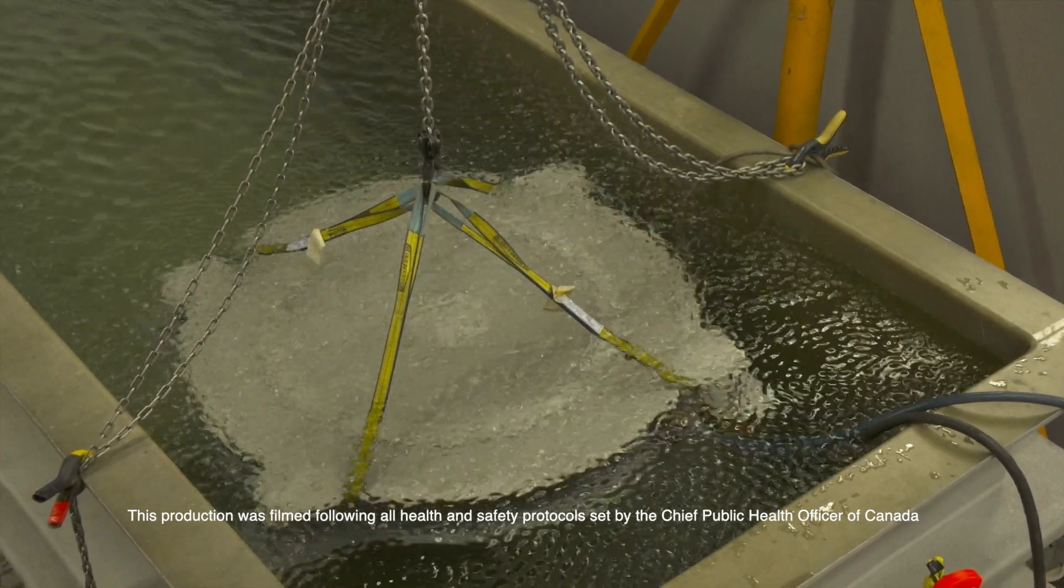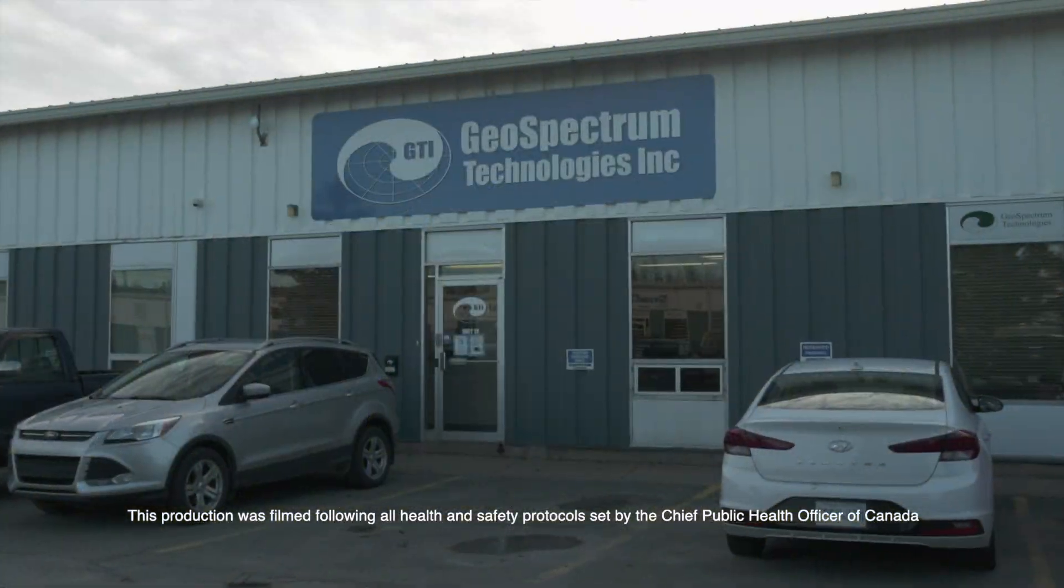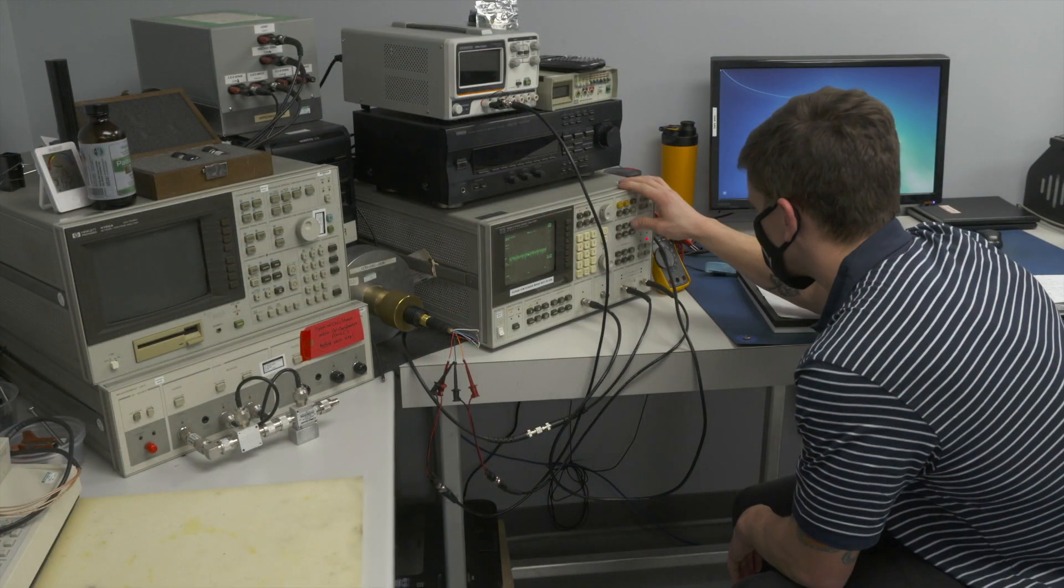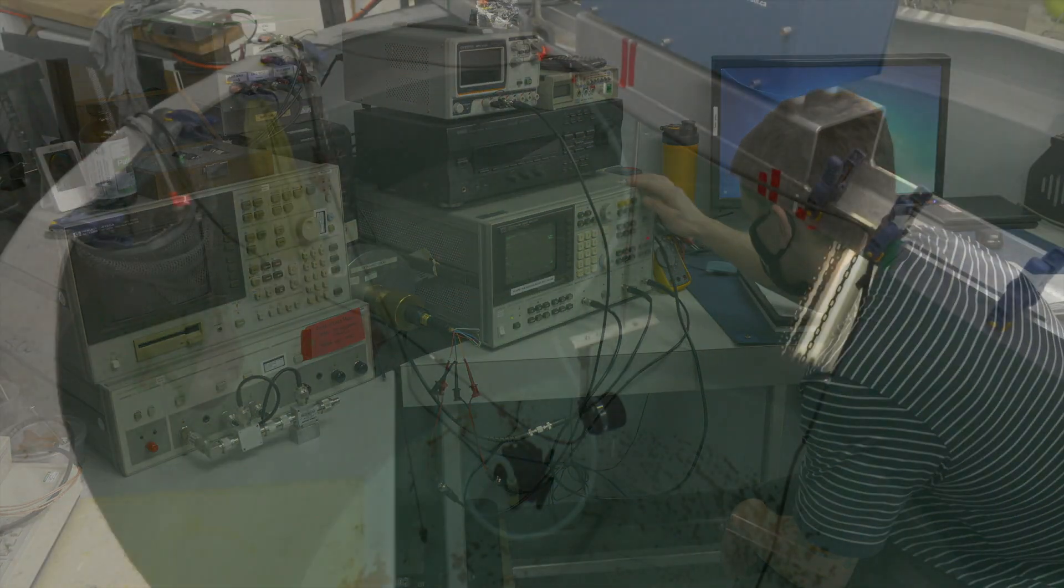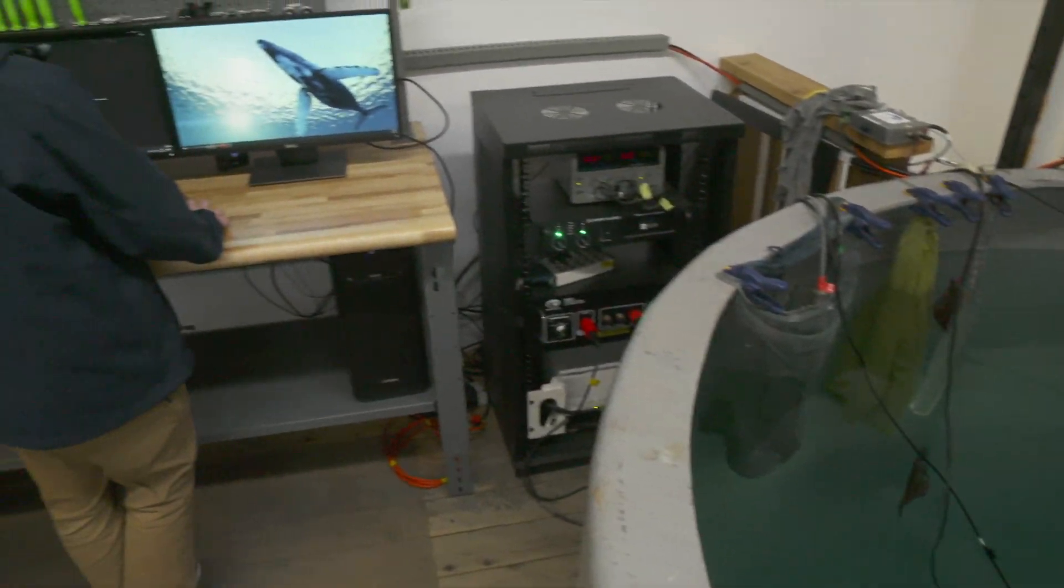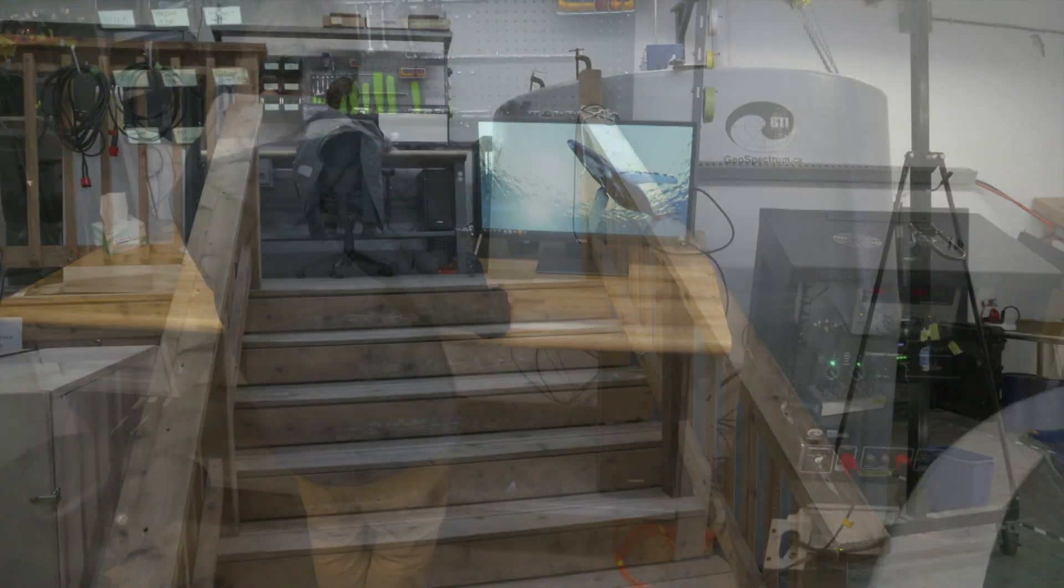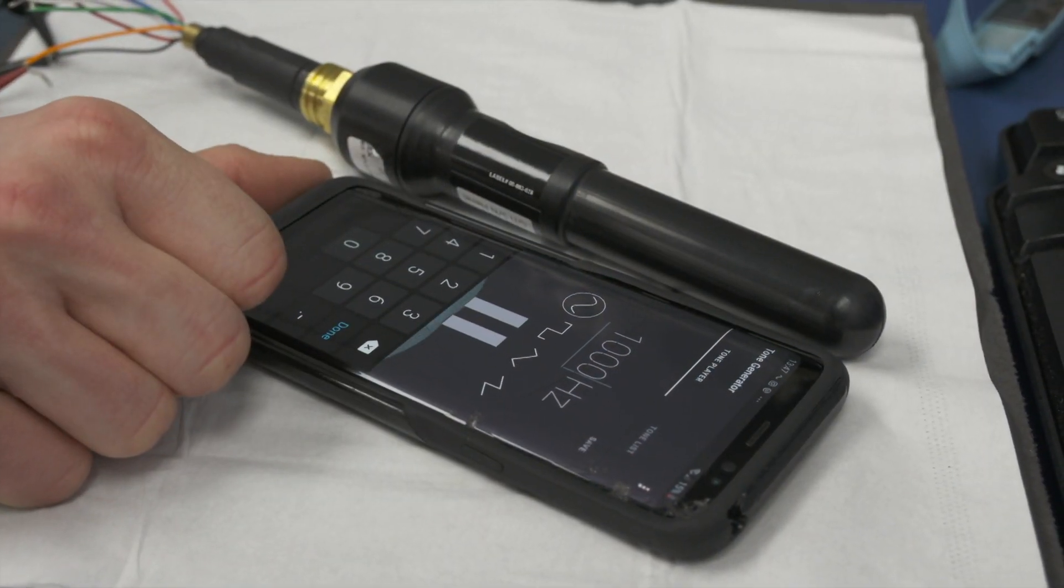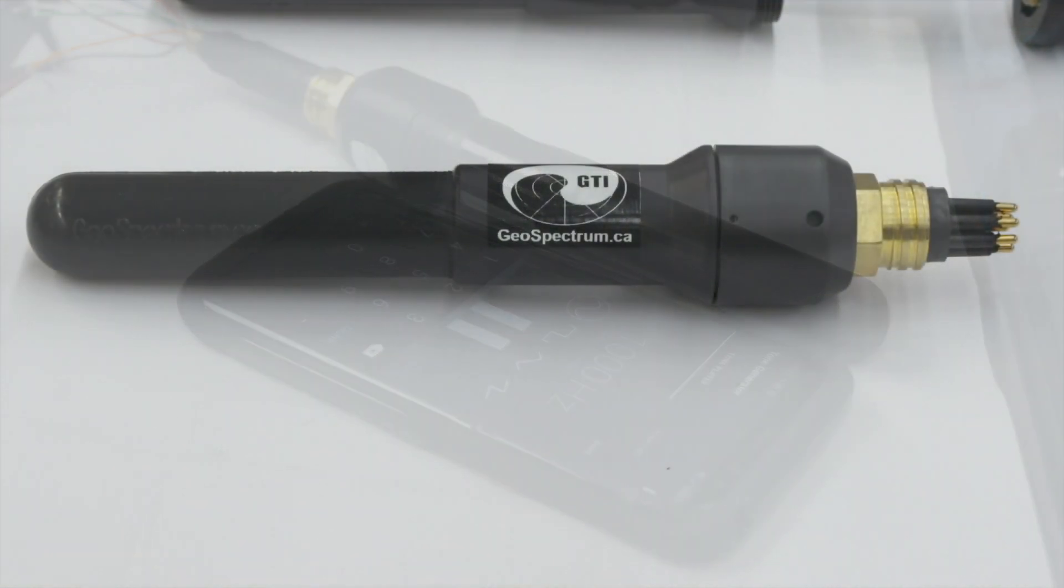Geospectrum Technologies designs and manufactures many different products for the marine environment that are used by scientists in the Arctic, elite navies around the world, and in all sorts of underwater communication applications. The Geospectrum Hydrophone is an underwater listening device that's used for things like detecting marine mammals and monitoring for problems in oil and gas operations.